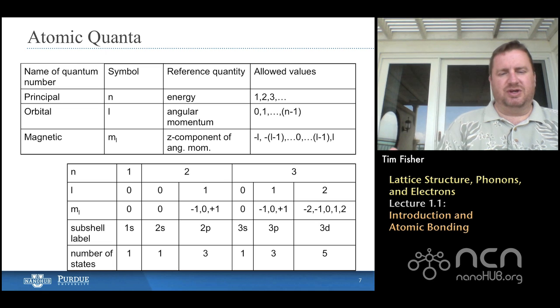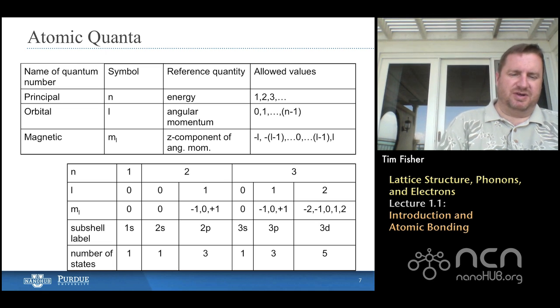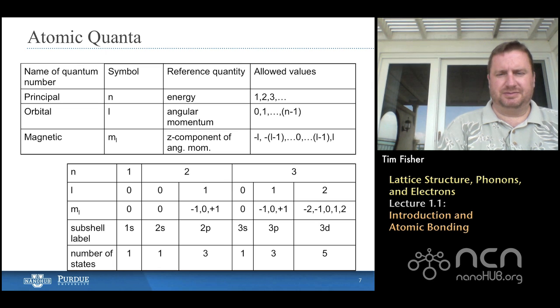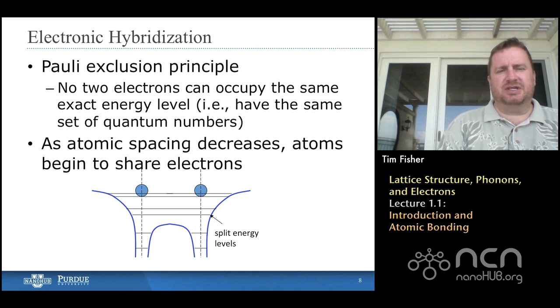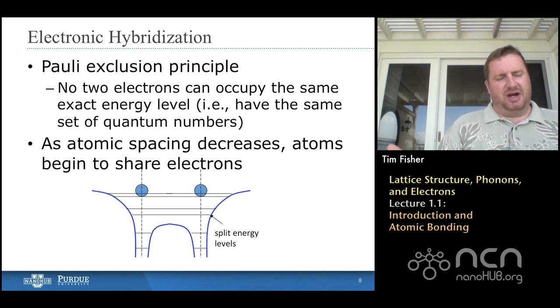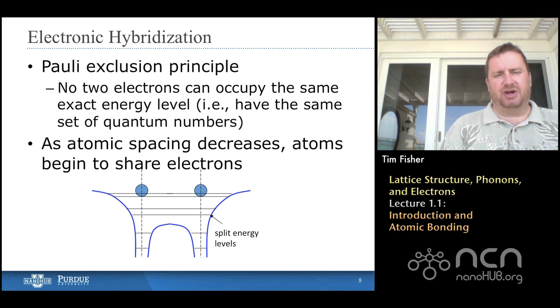But this is mainly here just so that you can appreciate some of the things you probably learned in physics and chemistry from before. When two atoms come together to form a solid, or in some cases a liquid, and in some cases gases as well if we have diatomic or more than two atoms per molecule, what happens is the electronic states cannot be occupied at the same time by two different electrons, at least of the same spin. And so we have to make some accommodation for other energy states. This is called electronic hybridization. What happens is when two atoms come together, their energy levels split a little bit to allow for the sharing of electrons.